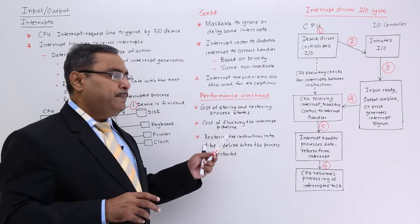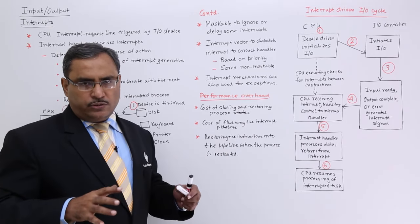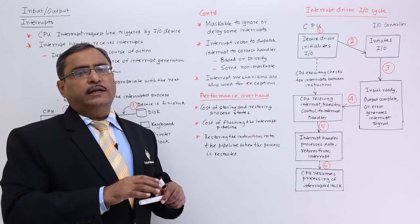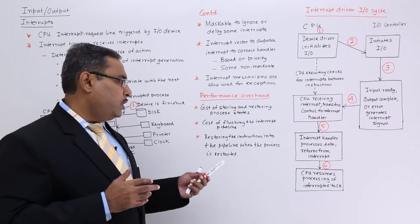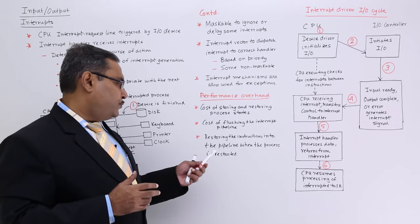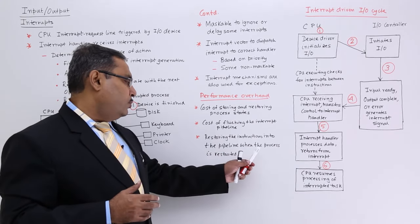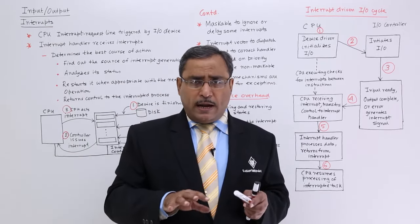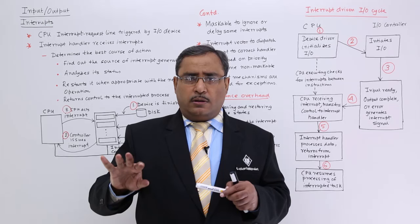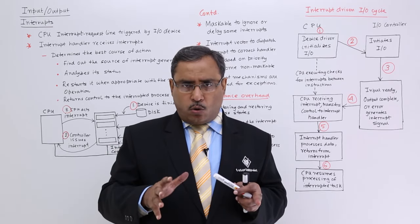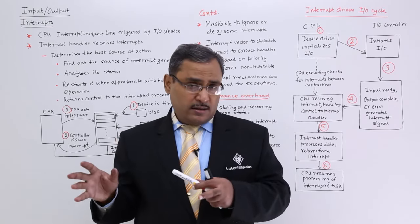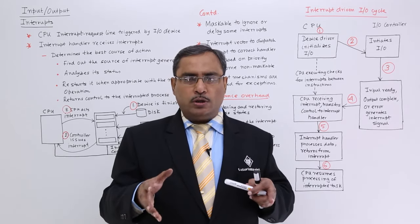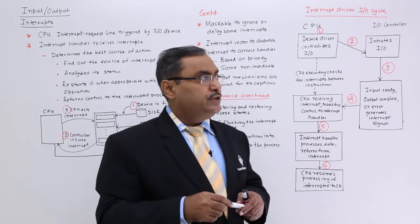Another overhead is the cost of flushing the interrupt pipeline. When the interrupt handler has finished execution, the pipeline must be flushed and the operation of the interrupted process must be resumed. Then, restoring the instructions into the pipeline when the process is restarted — the pipeline, which was occupied with the interrupt handler code, must be flushed and reloaded with the required code of the suspended process so that it can resume.